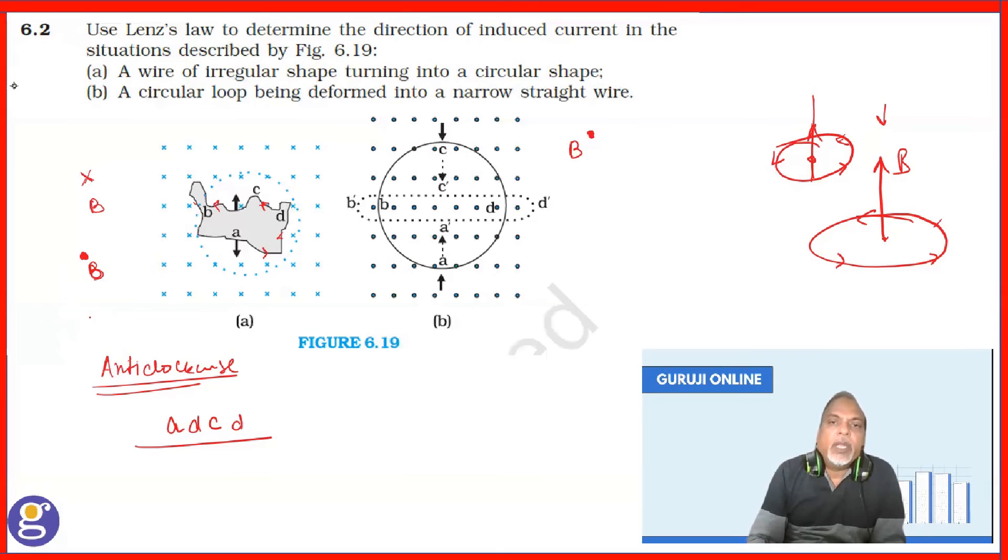But since it is decreasing, so induced current, whatever induced current here it is developing, it must also produce a dot magnetic field.